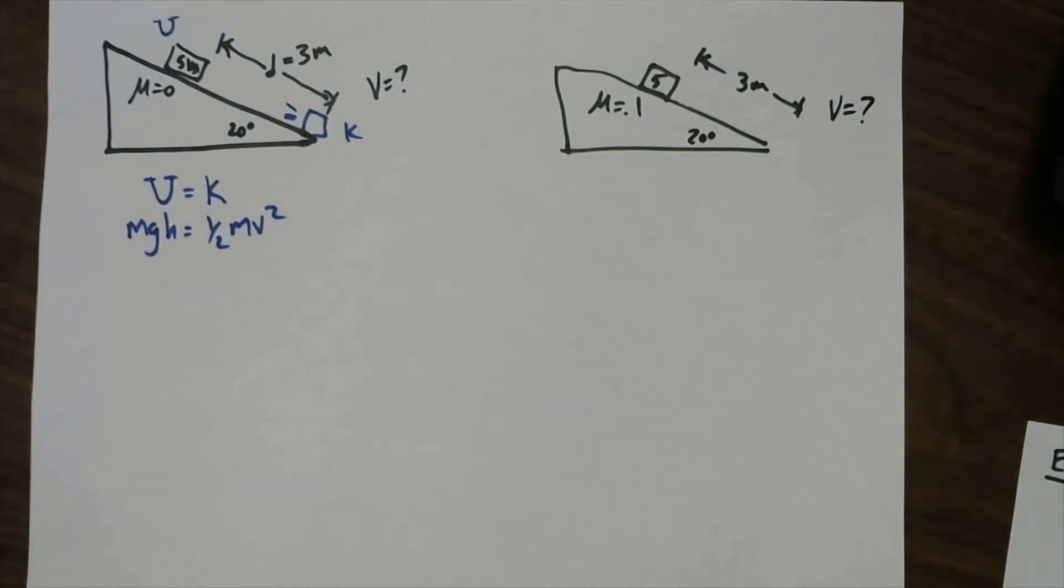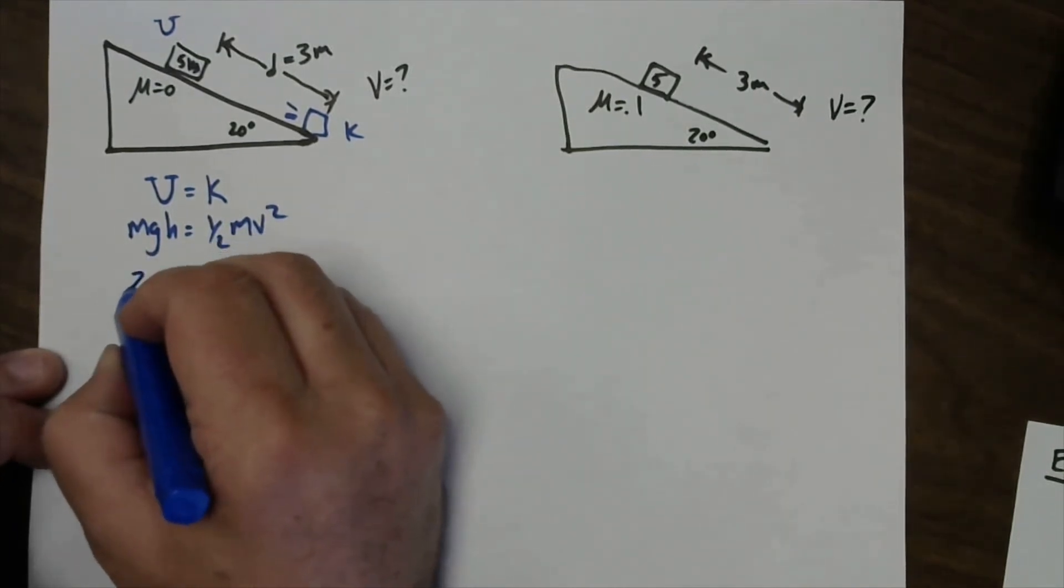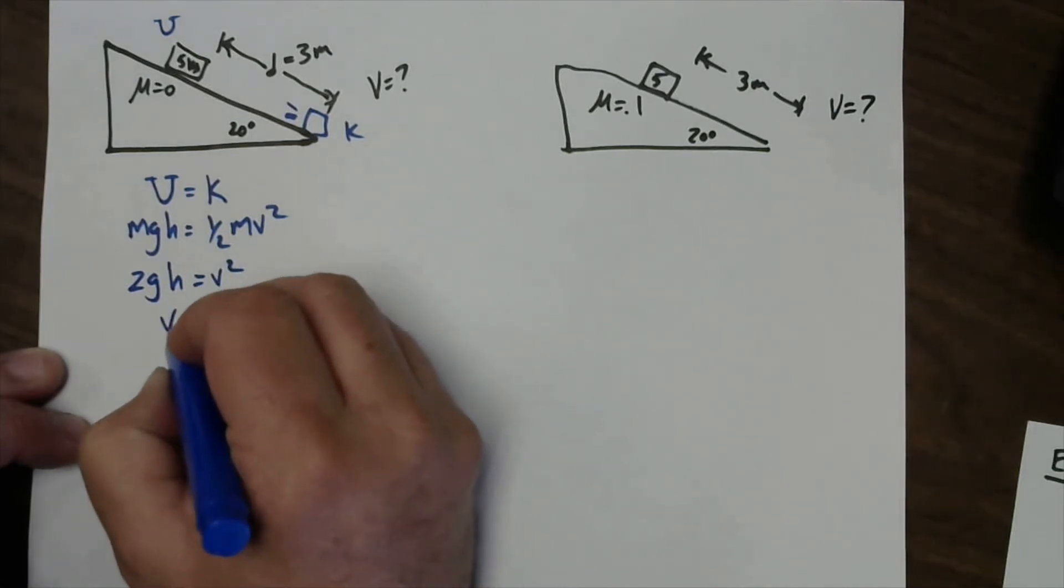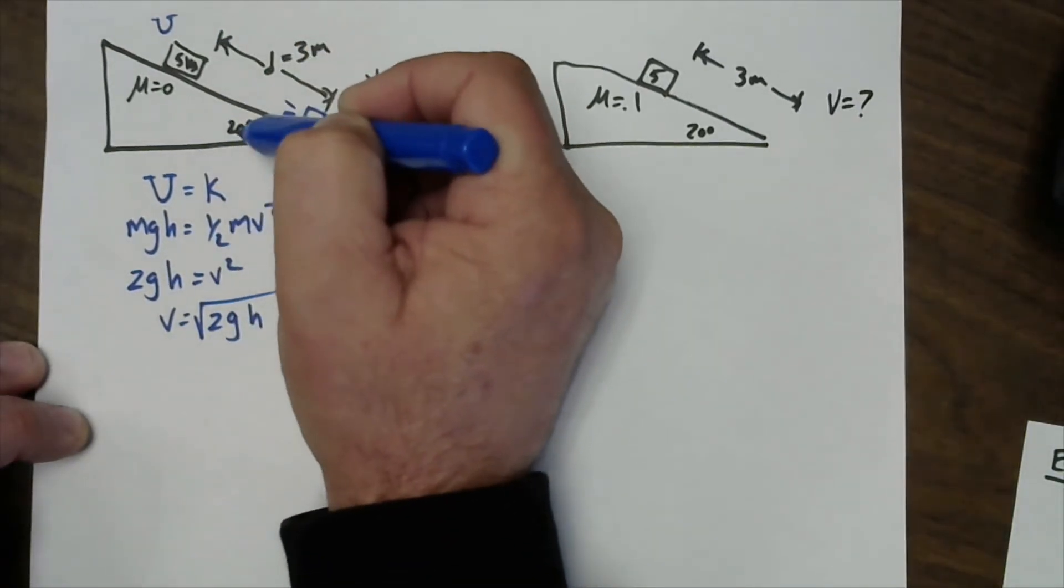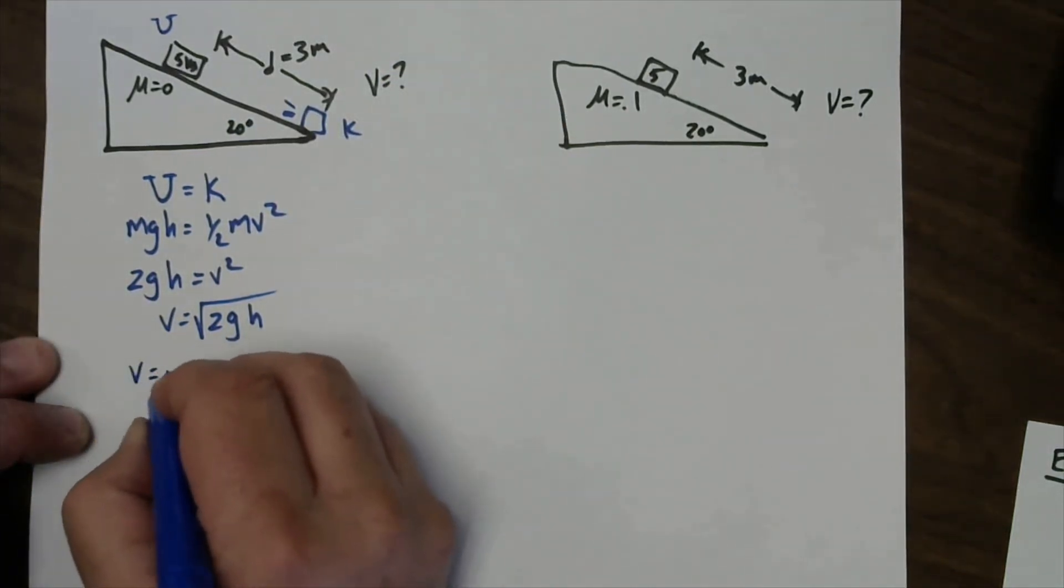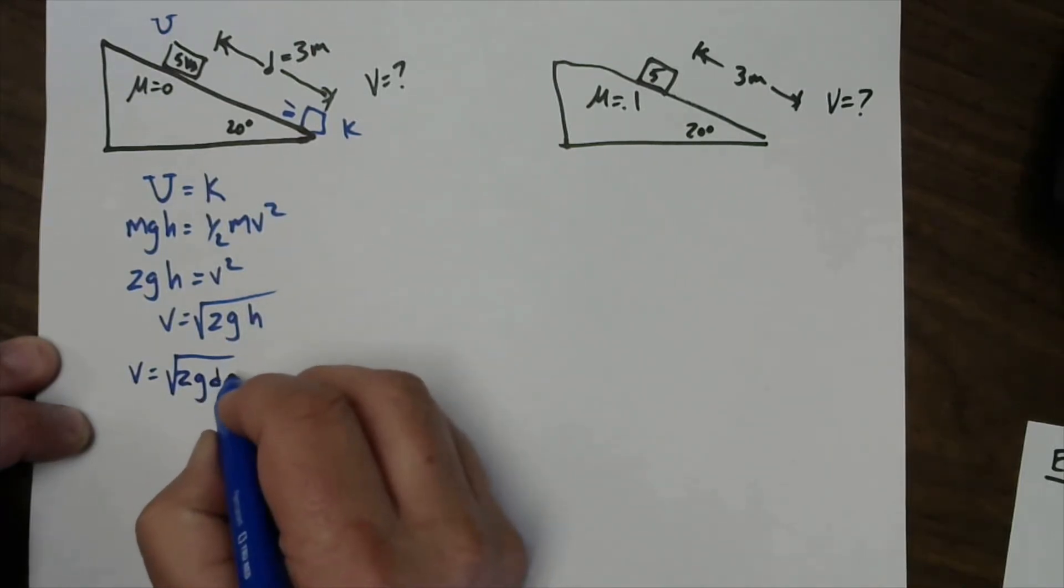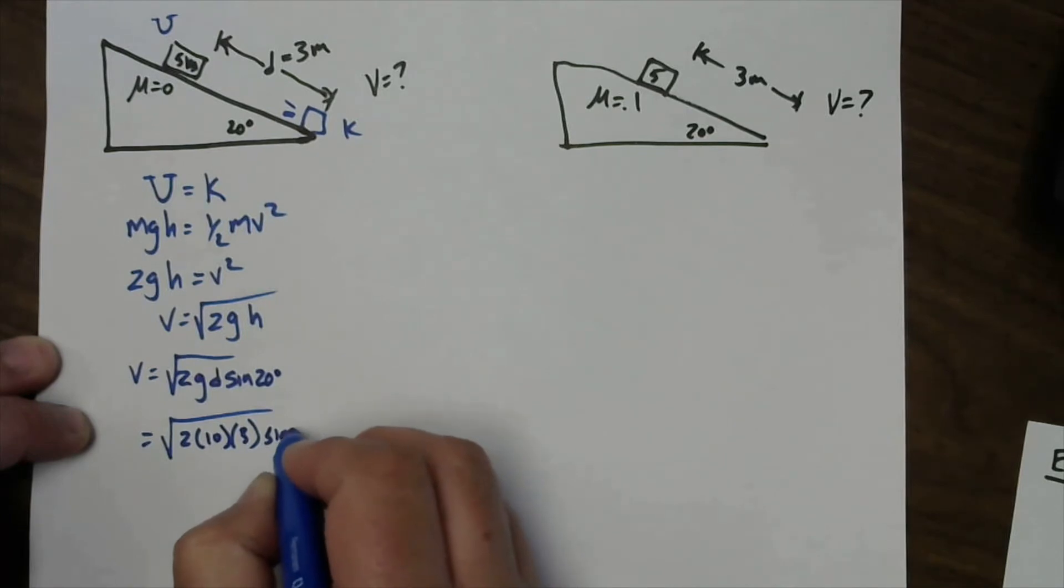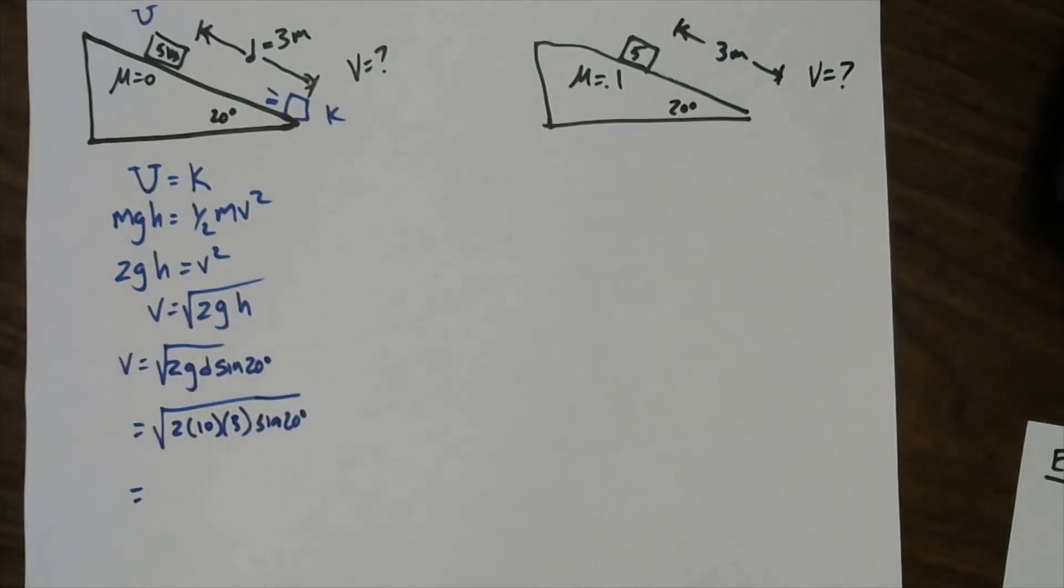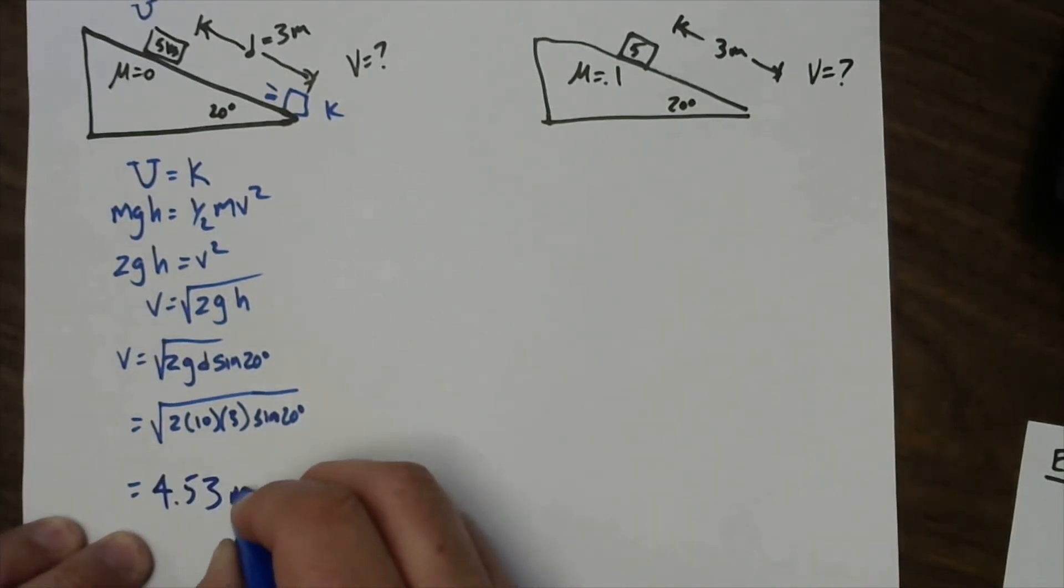So m's cancel, move the two to the other side, and we have 2gh equals v squared, or v equals square root of 2gh. Now, h is not something I know, but I can get it from a triangle, because I have the hypotenuse of the triangle being 3 meters, and the angle of the triangle being 20. So this is really going to be square root of 2gd times the sine of 20 degrees. And we'll put those numbers in. 2, 10, 3, sine 20 degrees, all under a square root. The calculator is on. 2 times 10 times 3, times sine of 20 equals, and now we take a square root of that answer, and we get 4.53. So this box will be moving at 4.53 meters per second when it gets to the bottom.